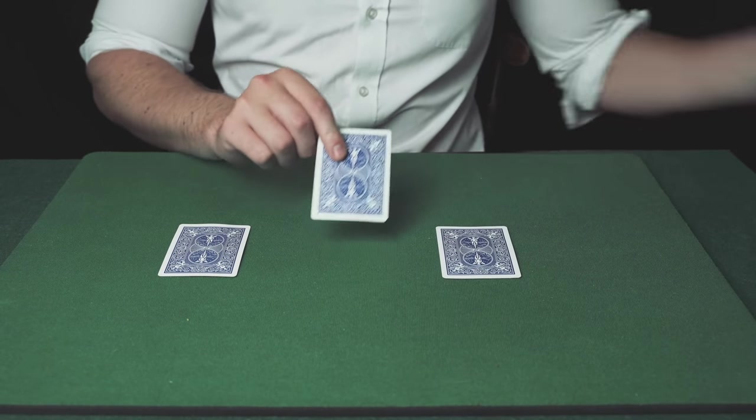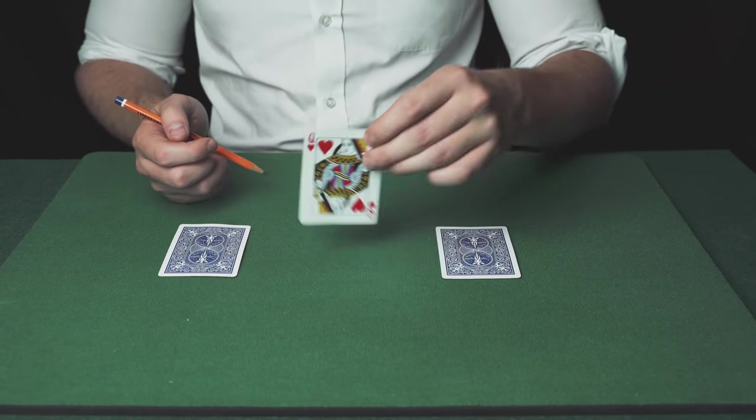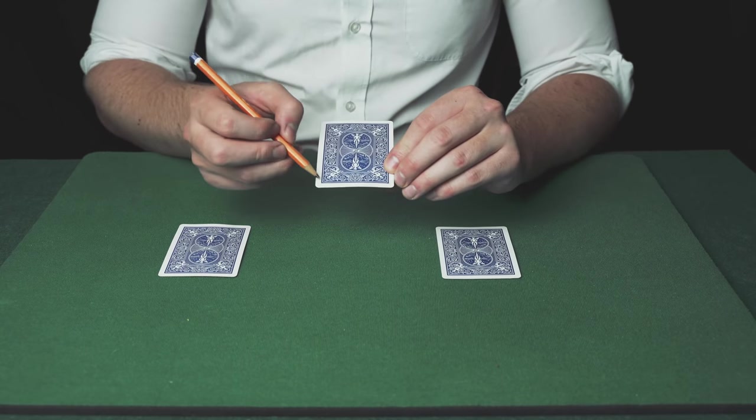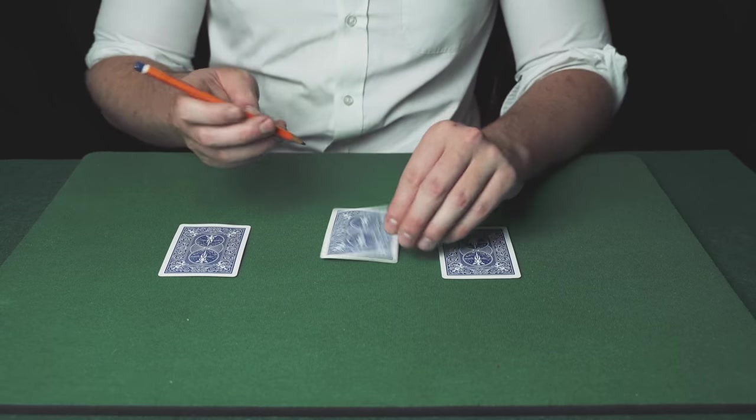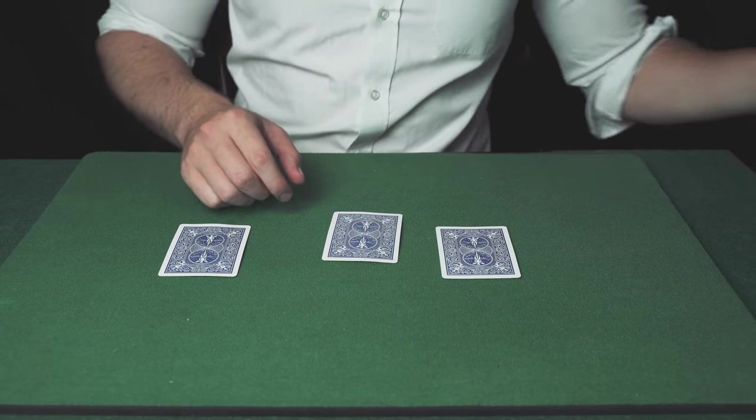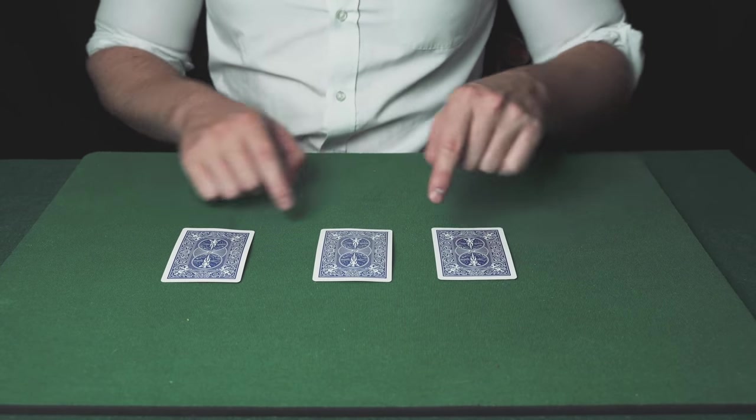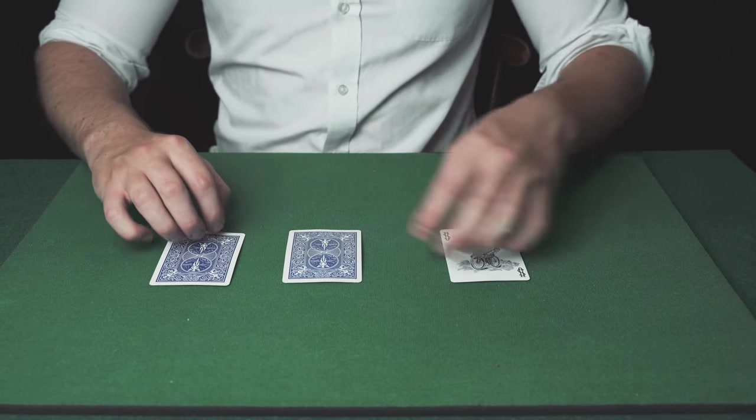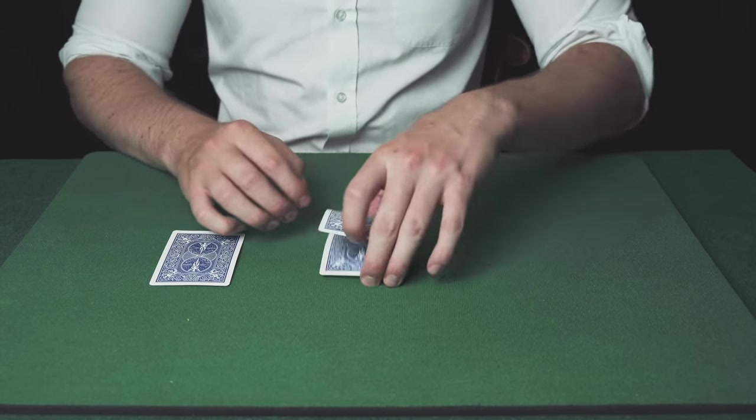Now you're ready to begin the routine. Take a pencil and lightly mark the back of the queen on the outside in all four corners. This means that later on you'll be able to identify the card when it's face down. The markings are so light the spectator will never notice.